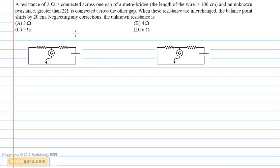In the given question, we have a resistor of 2 ohm and a resistor greater than 2 ohm, R, placed in the meter bridge. It is given that the balance point is obtained and the meter bridge is balanced, which forms a balanced Wheatstone bridge. Therefore, let us take the length of the wire across the first resistor to be L and the length of the wire across the second resistor to be 100-L.